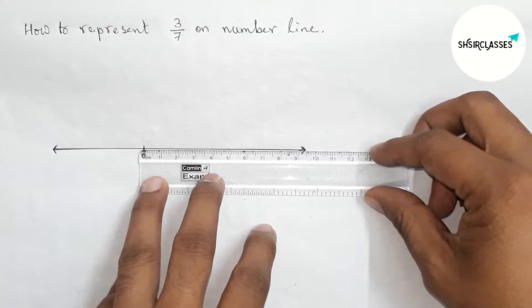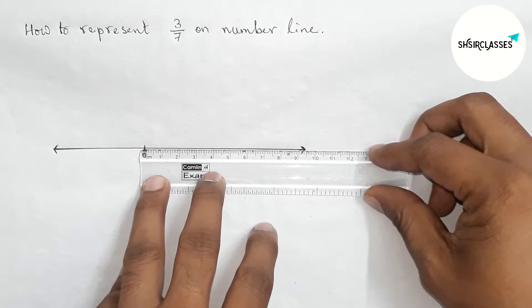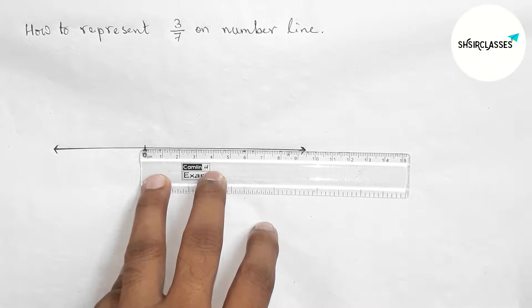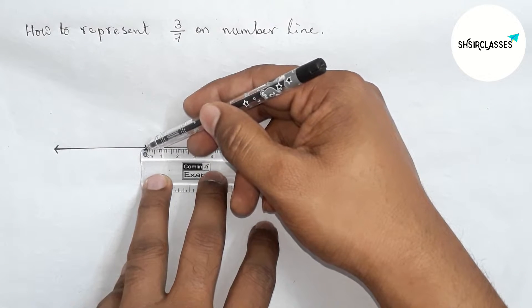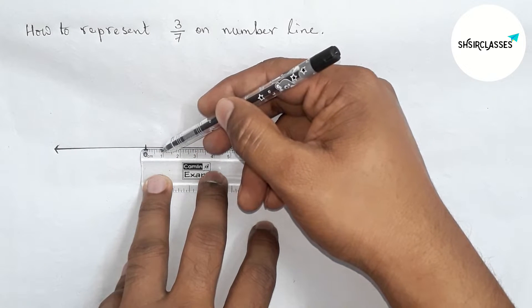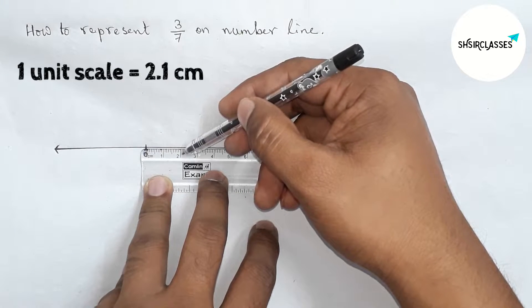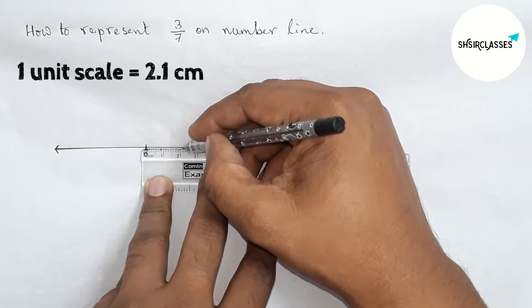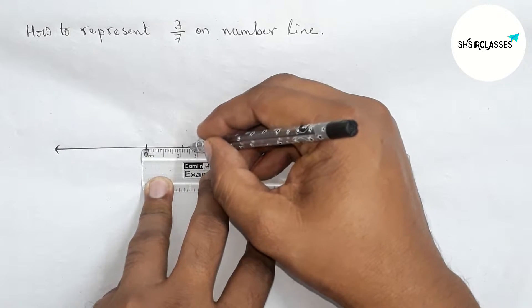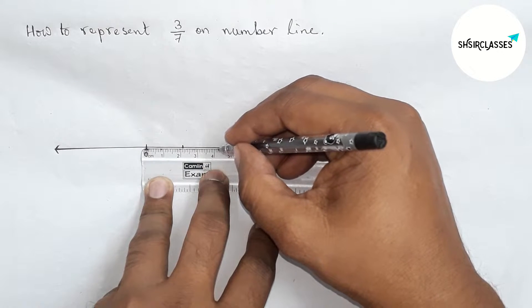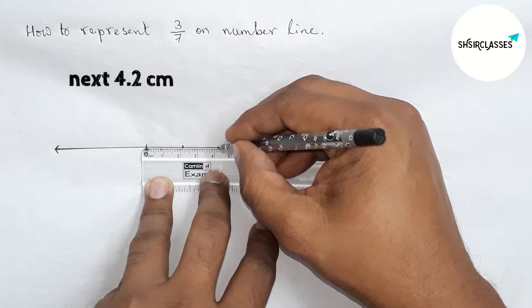Taking one unit length between any two numbers equal to 2.1 centimeters. So one unit scale equals 2.1 centimeters. This is first, then second one will be 4.2 centimeters.